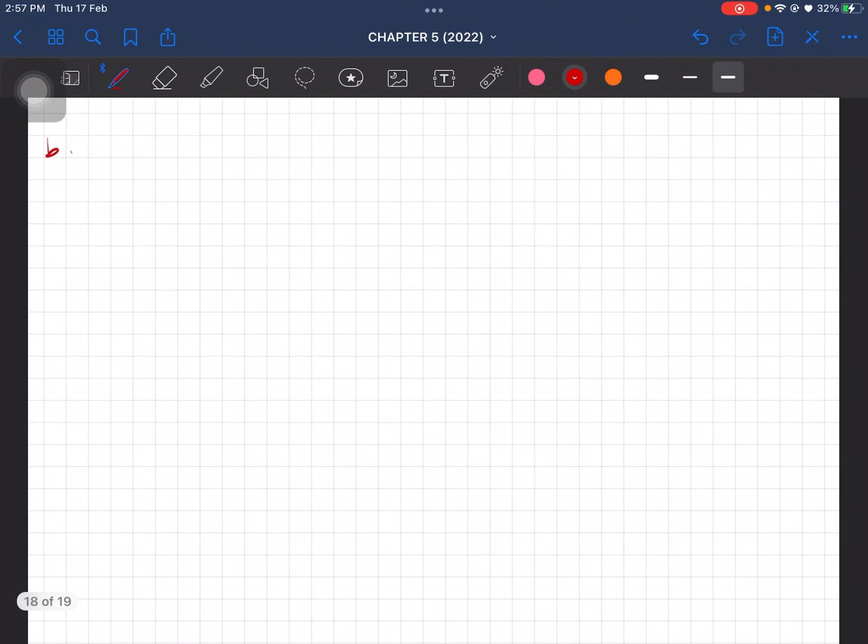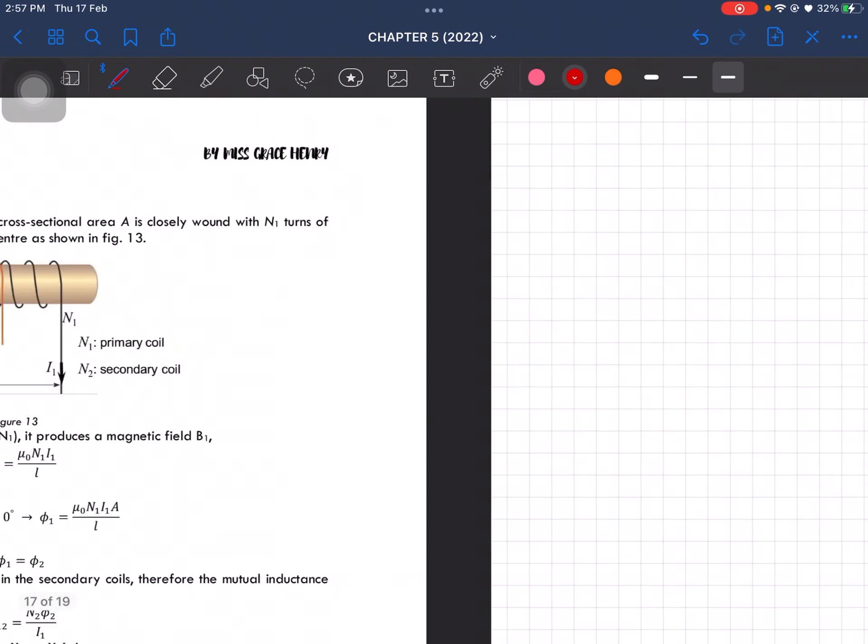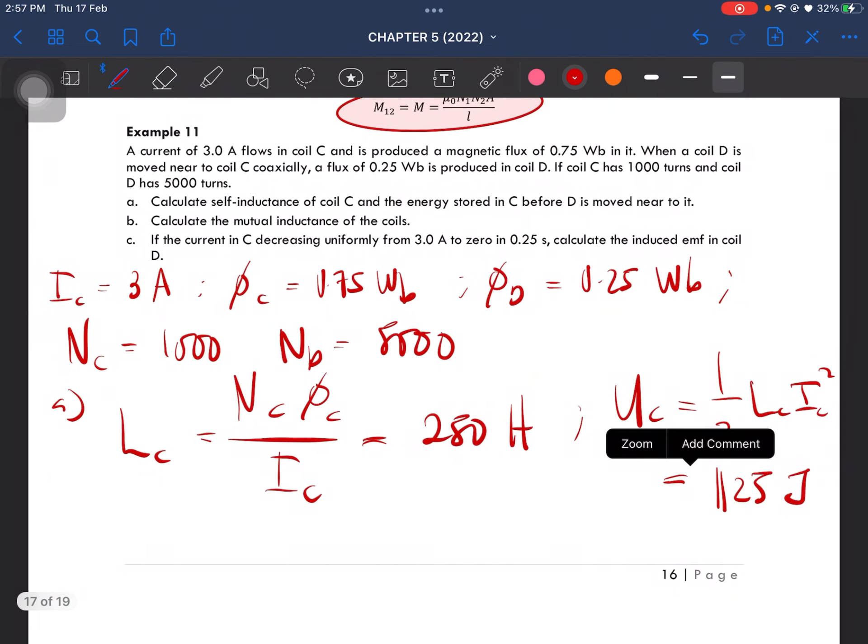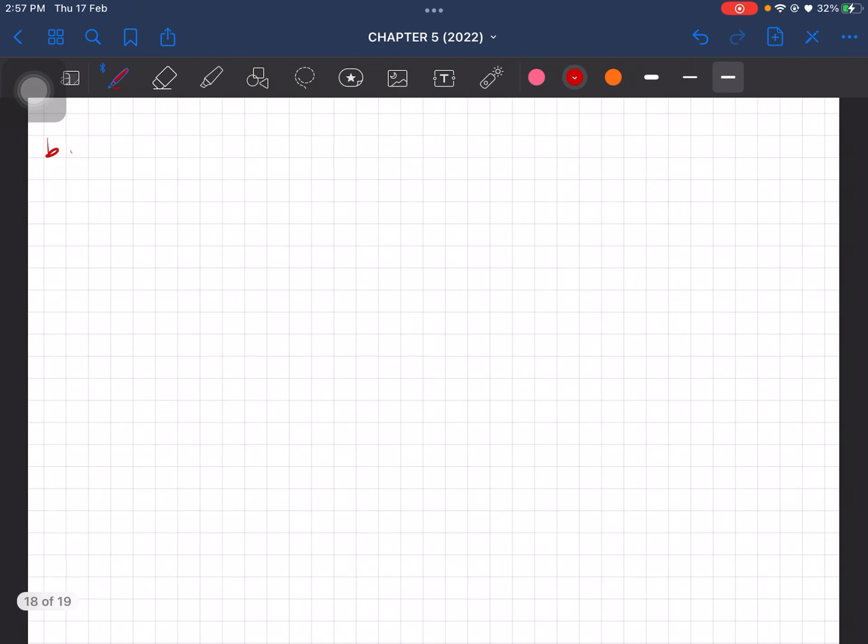Question B asks us to calculate the mutual inductance of the coils. It is given by M equals Nd phi d over Ic.